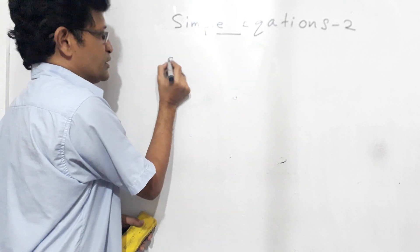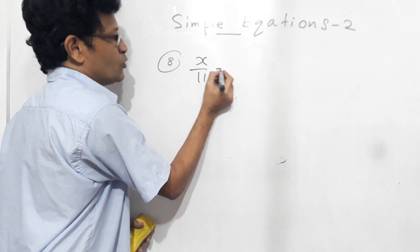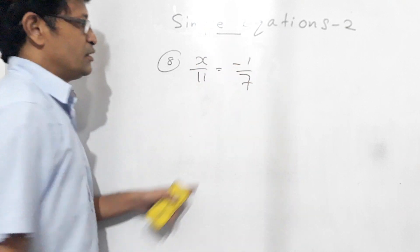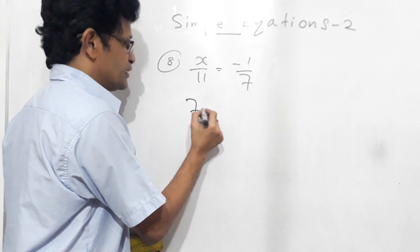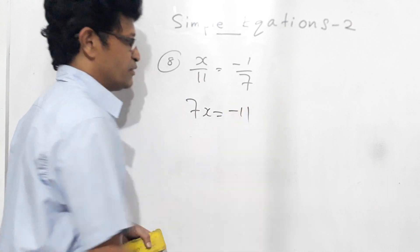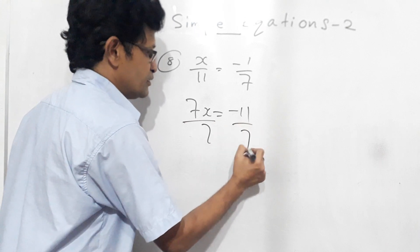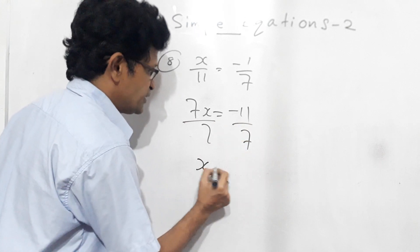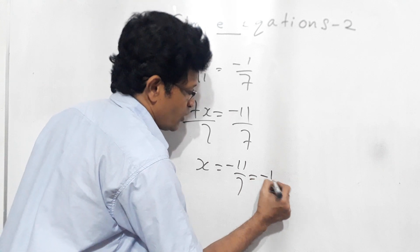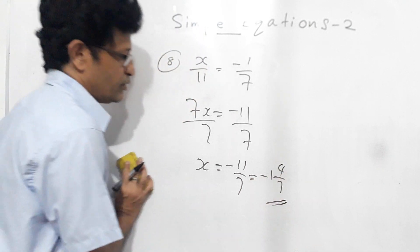Now question 8: x over 11 equals minus 1 over 7. Cross multiply: 7 into x gives 7x, equals 11 into minus 1, which is minus 11. Divide both sides by 7, so x equals minus 11 over 7, that means minus 1 and 4 over 7.